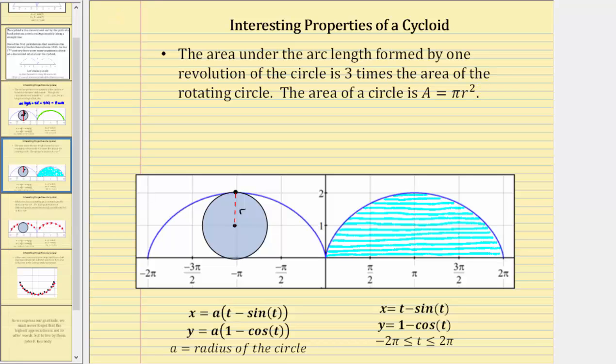And now looking at the graph below, one rotation or one revolution of the circle would give us this arc length, and therefore the shaded area is equal to three times the area of this circle.